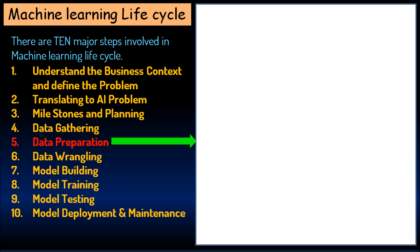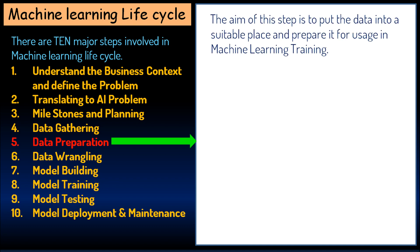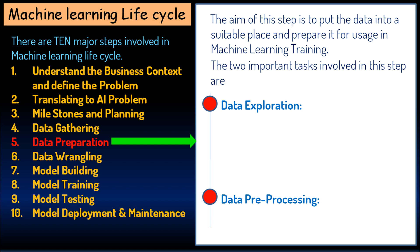The fifth step is data preparation. The aim of this step is to put the data into a suitable place and prepare it for usage in machine learning training. The two important tasks involved in this step are data exploration and data preprocessing.